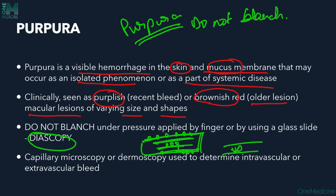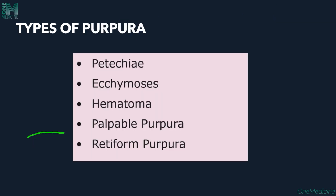Capillary microscopy or dermoscopy can be used to determine whether the bleed is intravascular or extravascular. Based on the size of the purpura, we have different types: petechiae, ecchymosis, hematomas, palpable purpura, and retiform purpura.